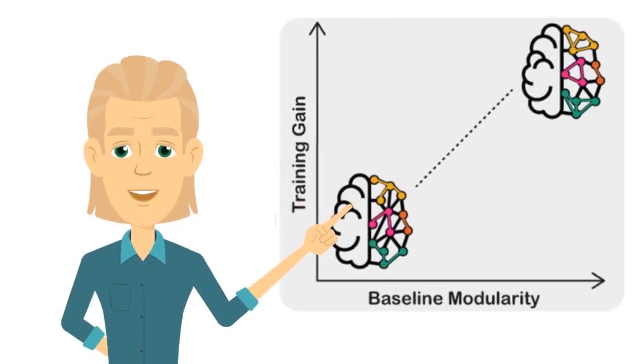In the last video we saw that the brain's modularity is a good biomarker of the effectiveness of brain training for intelligence.